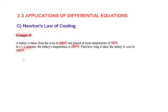Let us represent the given information on a timeline. In the beginning, when T is equal to 0, the turkey's temperature is 300 Fahrenheit. After 2 minutes, the turkey's temperature is dropped to 200 Fahrenheit. When the turkey's temperature drops to 150 Fahrenheit, find T.